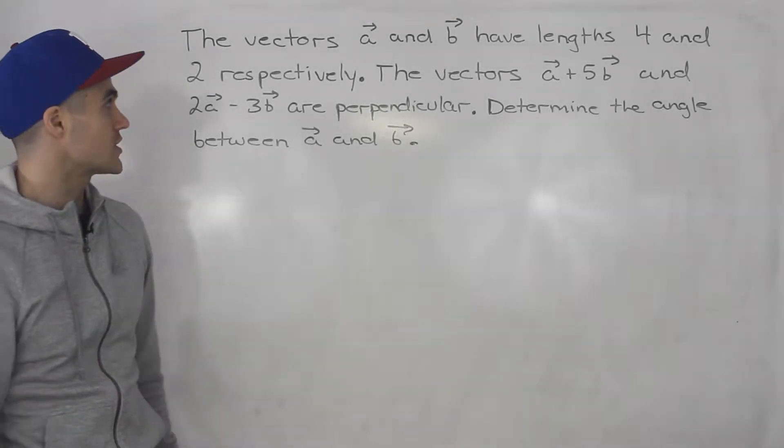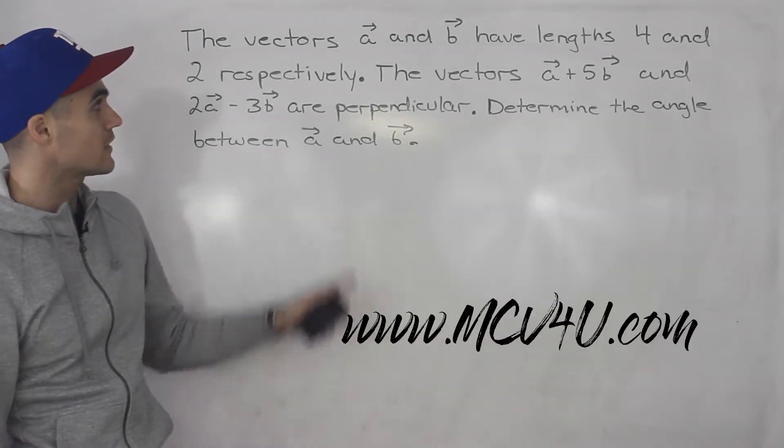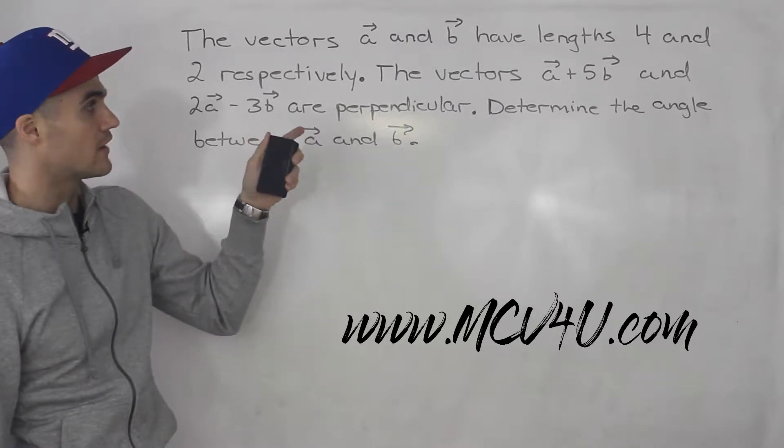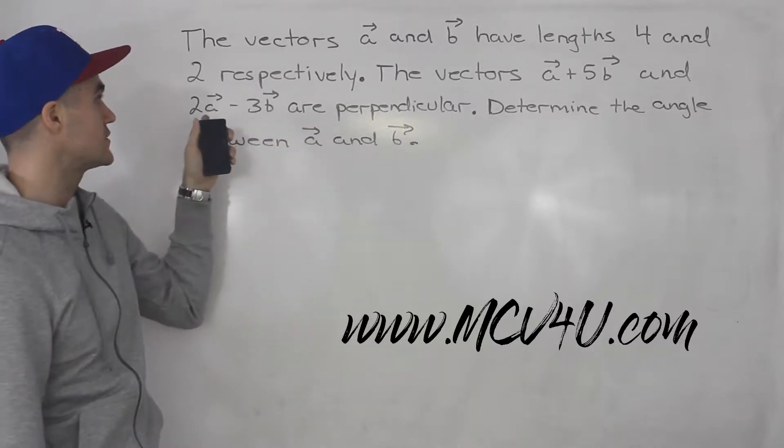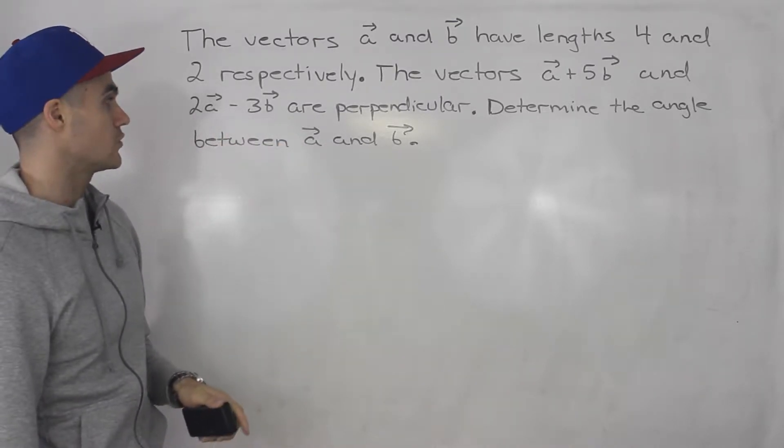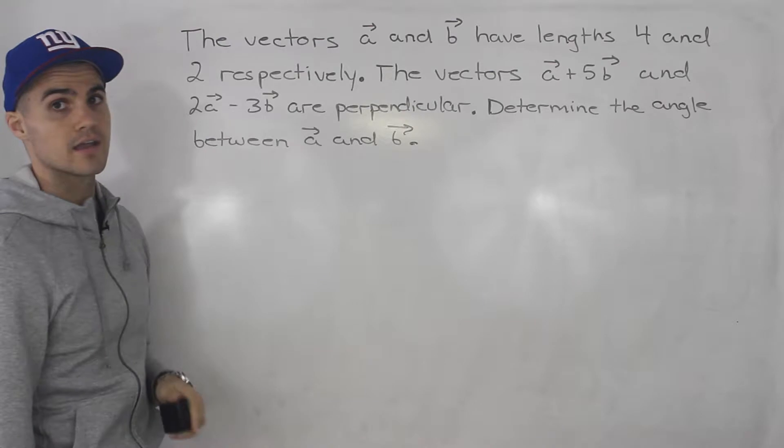Welcome back everybody. Another tricky question coming up in this video. The vectors a and b have lengths 4 and 2 respectively. The vectors (a + 5b) and (2a - 3b) are perpendicular. We have to determine the angle between vectors a and b.